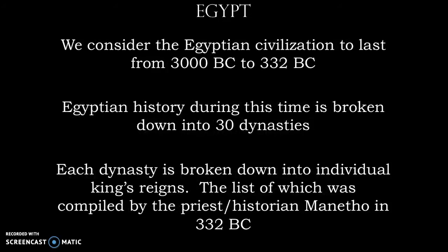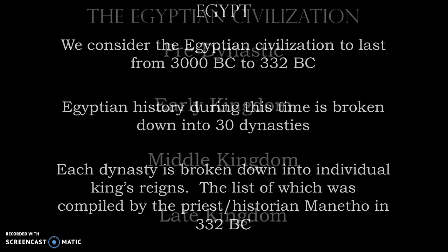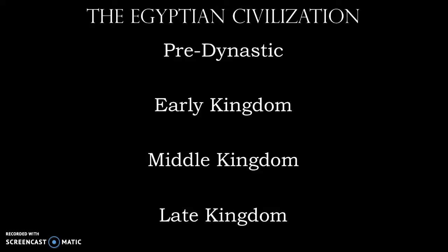The Egyptian civilization that we look at lasts from about 3000 BC to 332 BC. 332 BC is when Alexander the Great invades this area, and 3000 BC is roughly when the dynasties begin with the merging of Upper and Lower Egypt. There were people living in this area as early as 5000 BC. When we look at Egyptian history, we break it down into roughly 30 dynasties, and further into individual kings' reigns. That list was compiled by the priest and historian Manetho in 332 BC. We'll look at pre-dynastic Egypt and then the early, middle, and late kingdoms.